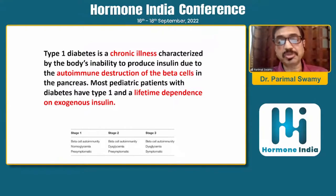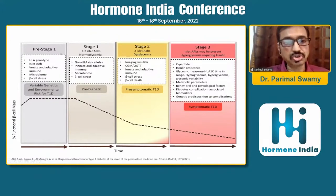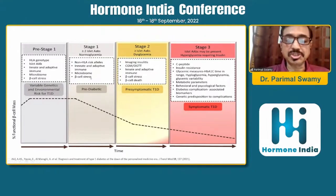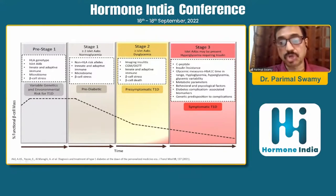Stage 1 is normal glycemia and is called presymptomatic. Stage 2 is dysglycemia and also presymptomatic. Stage 3 is the full-blown type 1 diabetes. Stage 1 is characterized by genetic predisposition, some beta cell stress, and the beginning of autoimmunity, with the role of microbiome, epigenetics, and environmental factors. Stage 2 sees dysglycemia begin. Stage 3, especially in our country, is often detected with the onset of diabetic ketoacidosis, with increased cost and sometimes mortality.